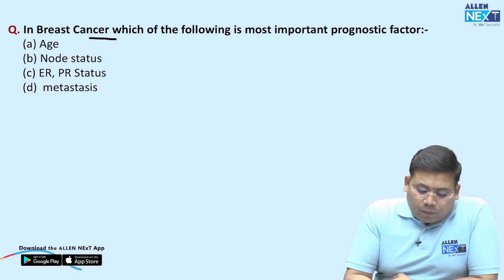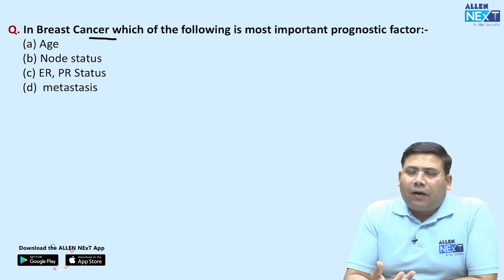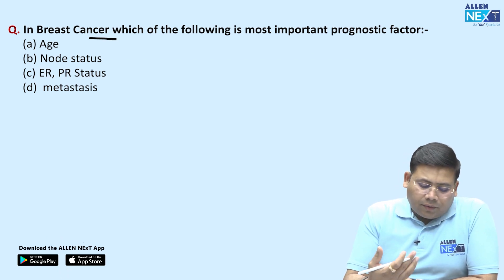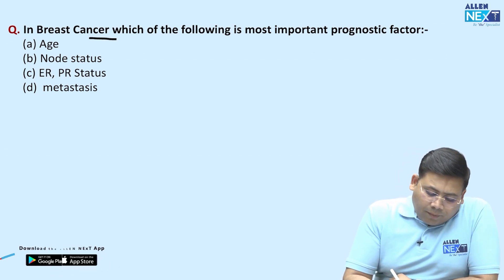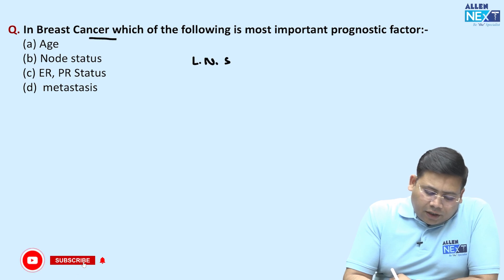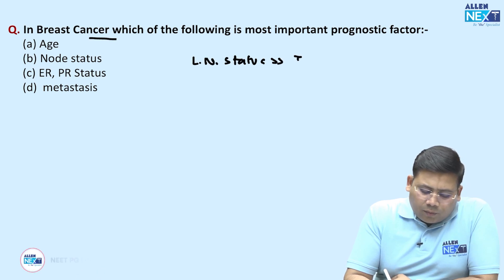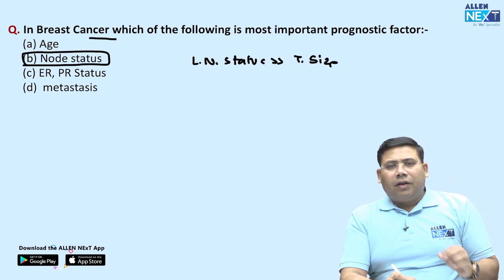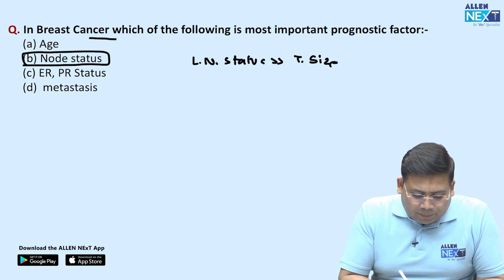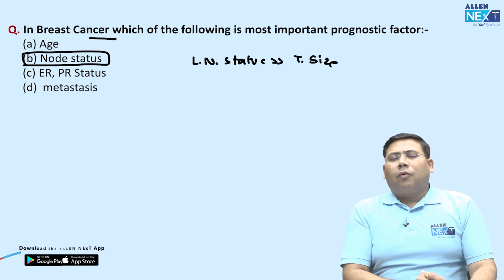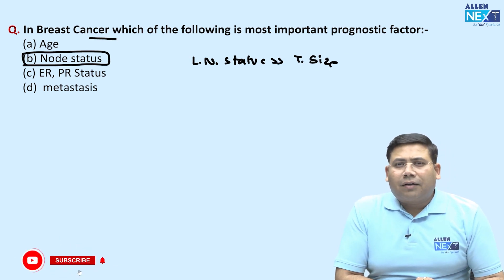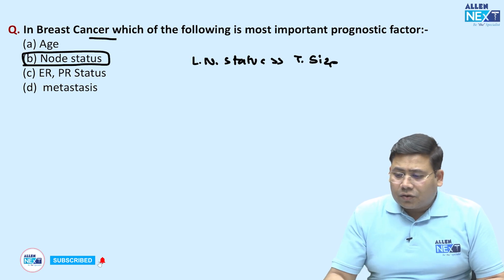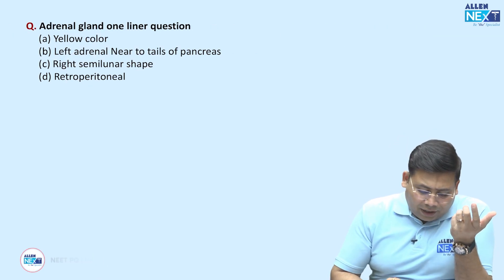Which is the most important prognostic factor in breast cancer? Remember, it is lymphovascular invasion, and therefore lymph node status is more important than tumor size. Nodal status is very important. When talking about ER/PR status, this is the most important prognostic factor in case of metastatic cancer. This is the classical difference.